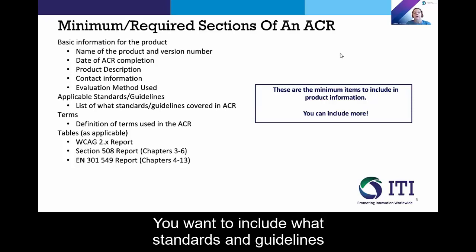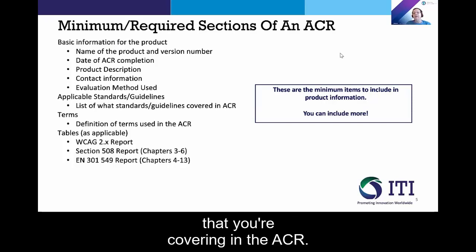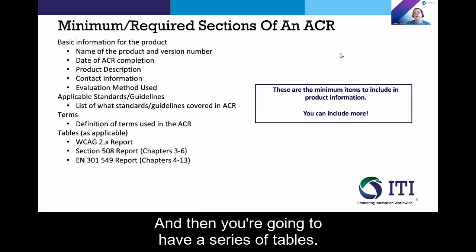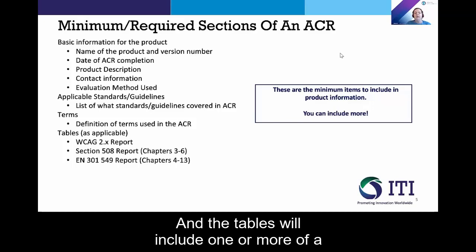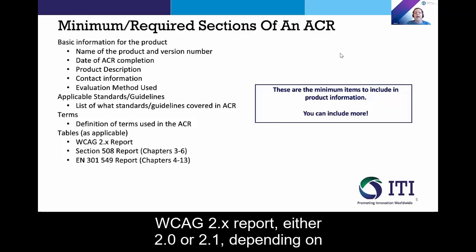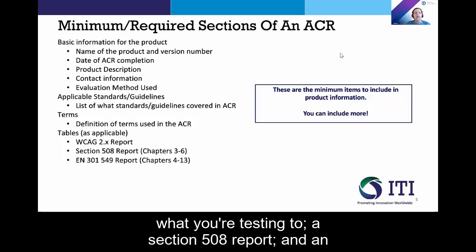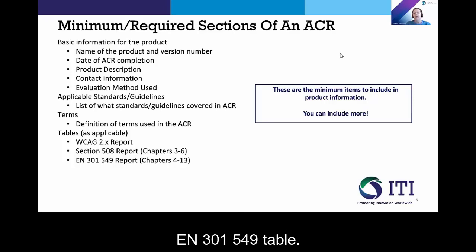You want to include what standards and guidelines you're covering in the ACR. There's a definition of terms, and then you're going to have a series of tables. The tables will include one or more of a WCAG 2.x report — either 2.0 or 2.1, depending on what you're testing to — a Section 508 report, and an EN 301 549 table.